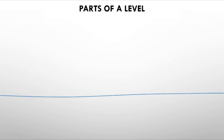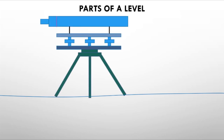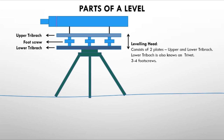Now let's look at different parts of a level. The leveling head has two plates — the upper plate and the lower tribrach. There are foot screws between the two plates to level the instrument. The telescope has a bubble tube at the center. Using the foot screw, we bring the bubble to the center to achieve proper level.